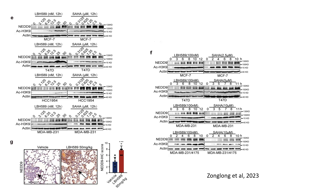Panel G presents immunohistochemistry analysis of lung metastatic nodules in mice treated with LBH589. The results show increased NET9 expression in treated mice, as evidenced by staining and quantified IHC scores. This suggests a role for NET9 in promoting metastasis. HDAC inhibitors such as LBH589 and Saha significantly upregulate NET9 expression, a protein associated with cytoskeleton organization and cell migration, and these changes are validated in vivo where NET9 expression is higher in metastatic lung nodules.